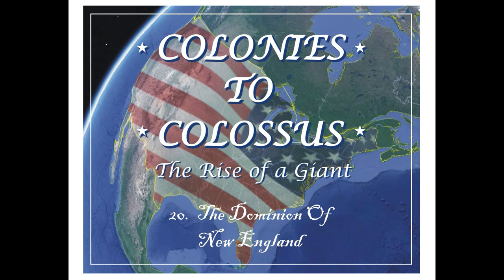Even though the Dominion only lasted a few years, it had some important lasting consequences, especially on Massachusetts Bay and on the Plymouth Colony. As you recall, Massachusetts Bay Colony fought the nullification of its charter in court and lost, so it had to have a new charter issued. The new king, William III, did issue a very generous charter to Massachusetts Bay Colony, but it had some important differences from their old one. Probably the most important difference was that the people would no longer elect their governor, but instead the governor would now be appointed by the king. The Plymouth Colony, the home of the Pilgrims and the first Thanksgiving, was merged into Massachusetts Bay Colony and they became one colony and disappeared from the map entirely.